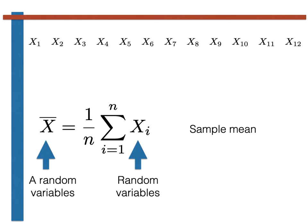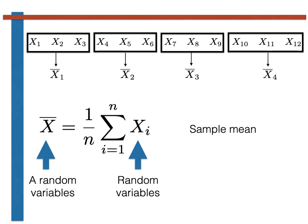Now if we are given 12 data points, there is no reason that we have to use all 12 of them to calculate the sample mean. We might instead split the data into blocks of three as shown here.